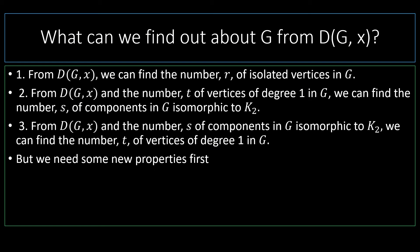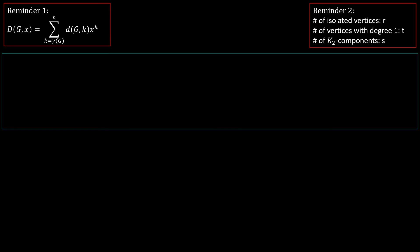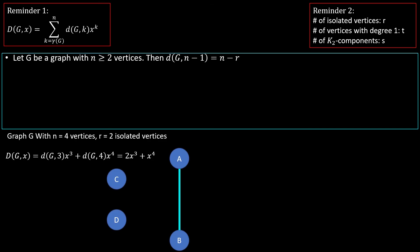In order to do these things, we need to use some new properties of domination polynomials. The first new property is that for a graph g with n greater than or equal to two vertices, the coefficient on the n minus one degree term of the domination polynomial is equal to n minus r, where r is the number of isolated vertices in g.